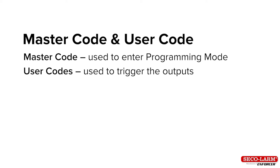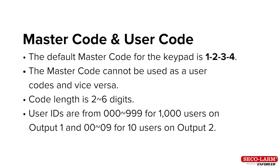The keypad has a master code and a user code. The master code is used to get into programming while the user code is used to trigger the output. The default master code for the keypad is 1234. Master codes cannot be used as a user code and vice versa. Code length is from 2 to 6 digits. User IDs are from 000 to 999 for 1000 users on output 1, and from 00 to 09 for 10 users on output 2.